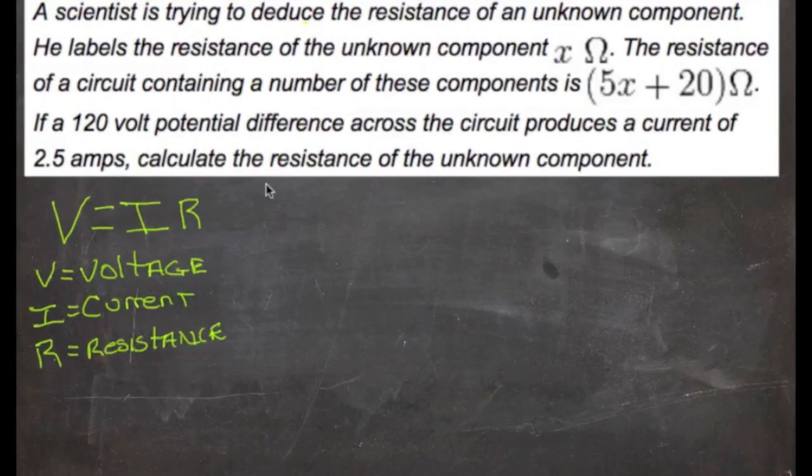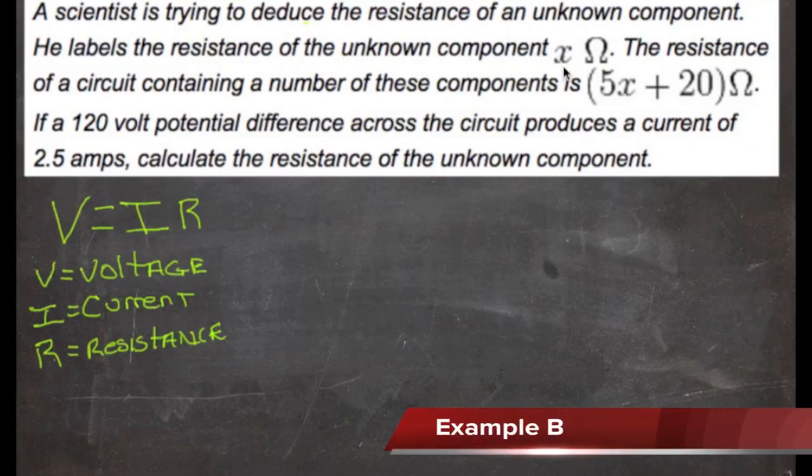A scientist is trying to deduce the resistance of an unknown component. He labels the resistance of the unknown component x ohms. The resistance of a circuit containing a number of these components is 5x plus 20 ohms. If a 120 volt potential difference across the circuit produces a current of 2.5 amps, calculate the resistance of the unknown component.